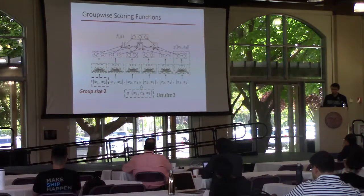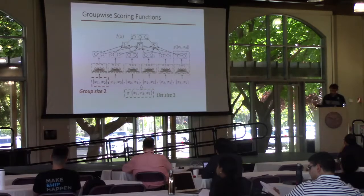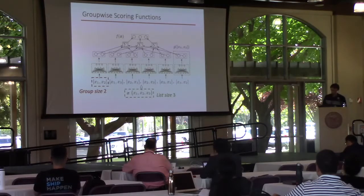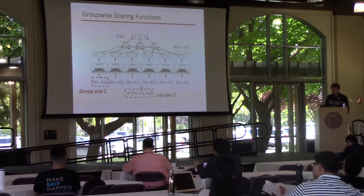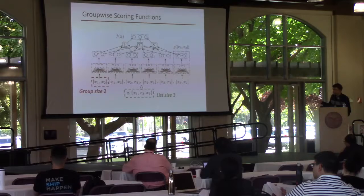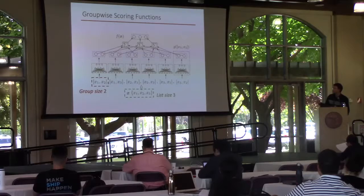Specifically for multivariate ranking, we propose a group-wise scoring function based on deep neural networks. For example, suppose the input is a list of three documents x1, x2, and x3. Our group-wise ranking function takes two documents as input and produces two scores for them. After that, we aggregate the scores of each document from each group comparison to form the final ranking score for all documents. In this example, the list size is three and the group size is two.